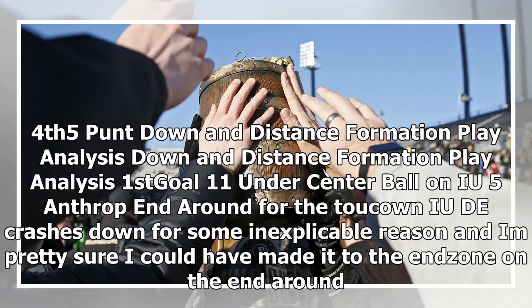Fourth and 5, punt. Then: first and goal, 11 under center, ball on the U5. Anthrop end around for the two-point conversion. The defender crashes down for some inexplicable reason and Anthrop makes it to the end zone on the end around.